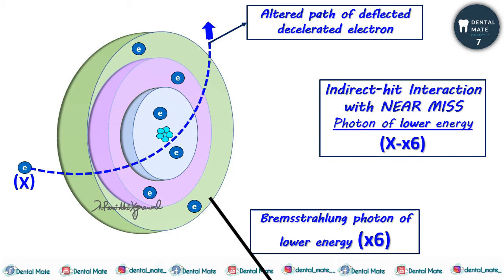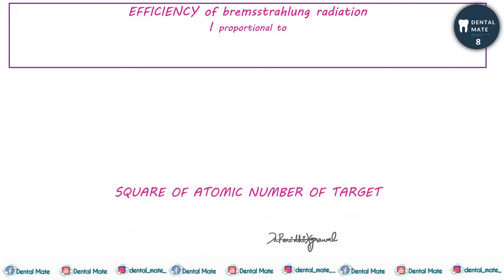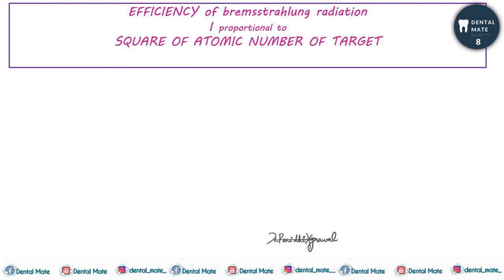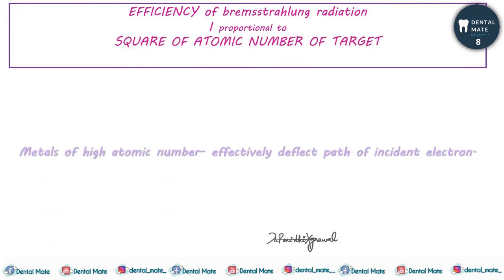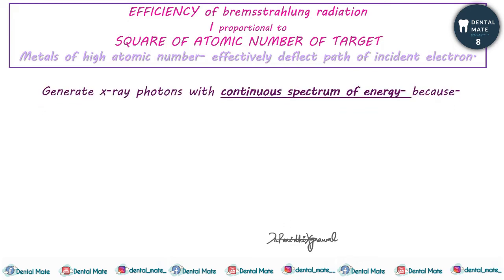The efficiency of Bremsstrahlung radiation is proportional to the square of the atomic number of the target. Metals with high atomic number effectively deflect the path of incident electrons. This type of radiation — Bremsstrahlung radiation — generates a continuous spectrum of energy.